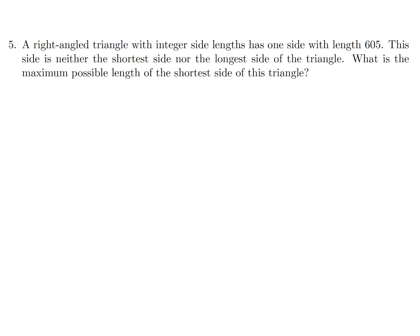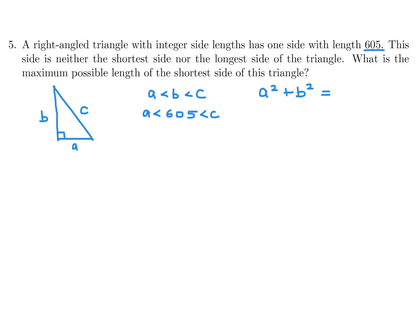A right-angled triangle with integer side lengths has one side with length 605. This side is neither the shortest nor the longest side of the triangle. What is the maximum possible length of the shortest side? Let's draw a right triangle and label the sides A, B, and C. If A is less than B is less than C, then B is 605. Since it's right-angled, we use the Pythagorean relationship: A squared plus B squared equals C squared.